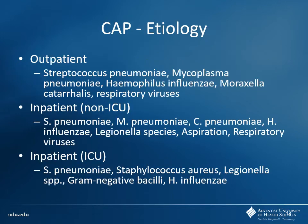What I will show you is what are we thinking about as far as bacteria likely to cause disease here. It kind of stratifies based on where patients are going for further management. Patients who are not sick enough to require inpatient admission — what you're going to see growing are things like strep pneumo, mycoplasma pneumoniae — so now we have an atypical bug — H. flu, Moraxella catarrhalis, and then a lot of viruses. So we're looking at the normal upper respiratory tract bugs plus mycoplasma.